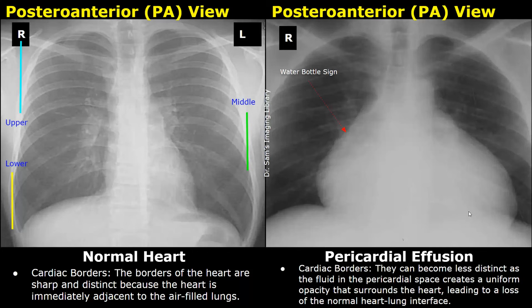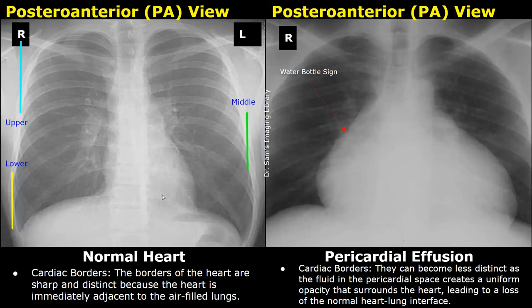Due to fluid accumulation, a uniform opacity or brightness is seen within the heart, and we do not see the normal heart-lung interface. Normally we can see the heart, lungs, and even the ribs through the heart. But in pericardial effusion there is a very bright, uniform opacity throughout — seen in moderate to severe pericardial effusion.